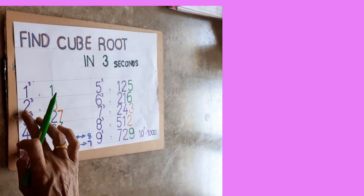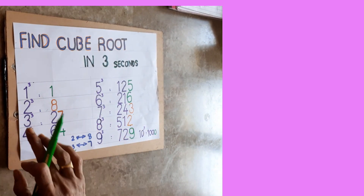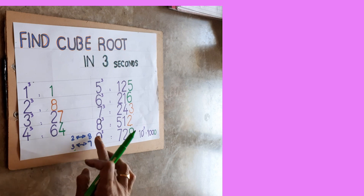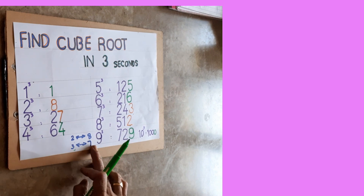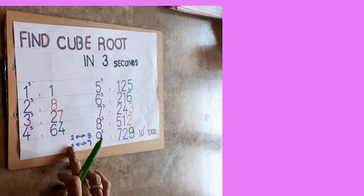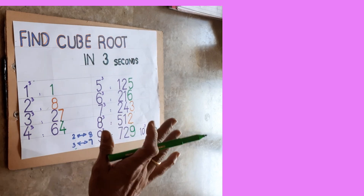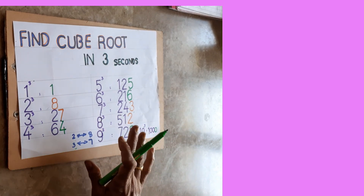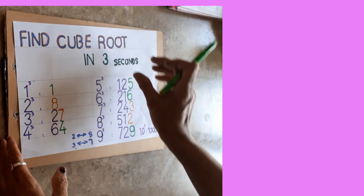So remember: 2 → 8, 8 → 2 (reverse); 3 → 7, 7 → 3 (reverse). These 4 pairs you have to remember — remaining all numbers give the same digit in units place. If you remember this, you can do it very easily. I will tell you what the trick is.